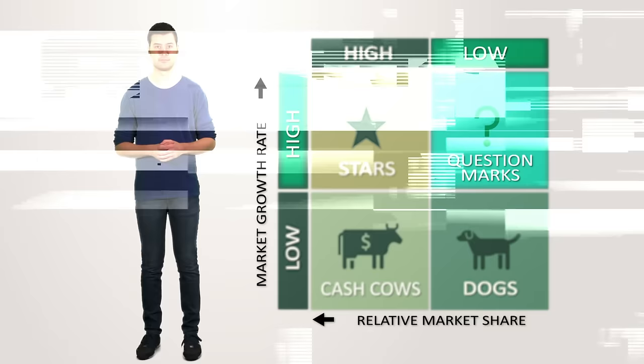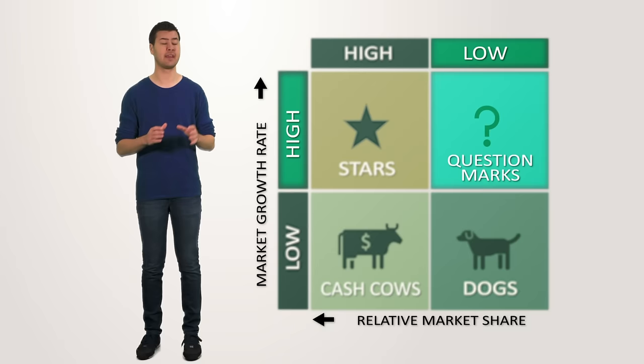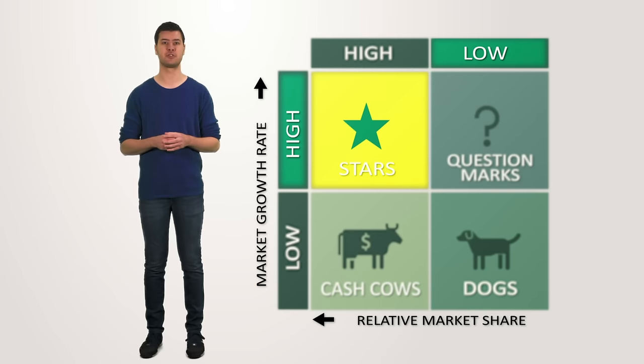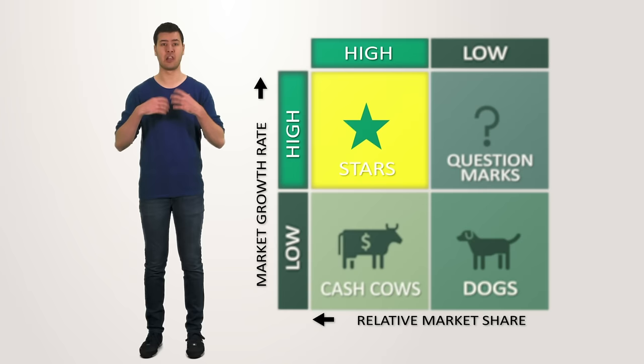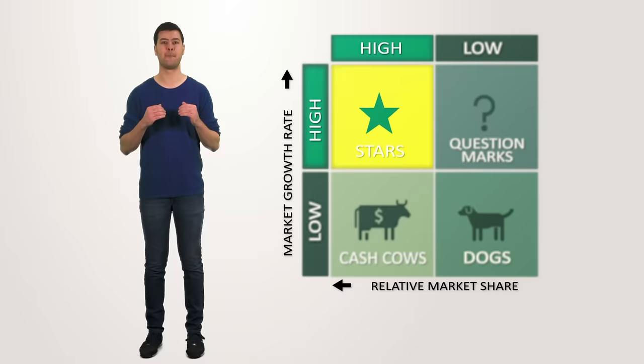Imagine everything has been going well for your question mark and it has now turned into a market leader, a star. Stars are business units with a high relative market share in a fast growing industry. Stars generate large amounts of cash because of their high relative market share, but also require large investments to fight competitors and maintain or even grow their current market share. The cash needed to invest in for example marketing therefore often balances out the cash generated through revenues.